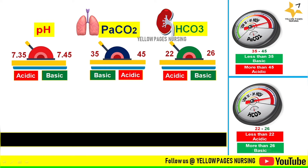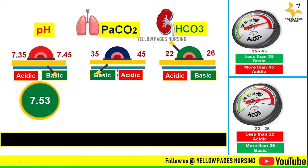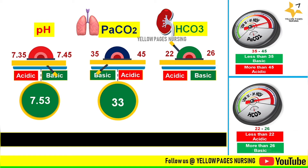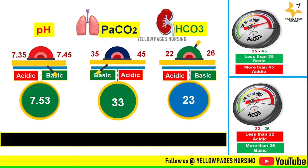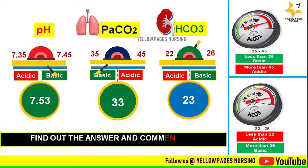The next example is for viewers to analyze. The level of pH is above the normal level at 7.53, the level of PaCO2 is below the normal level at 33, and the level of bicarbonate lies within the normal range at 23. Write your answers in the comment box — hopefully it is easy for you to answer now.